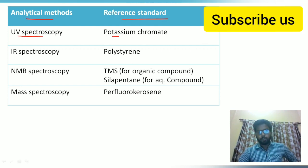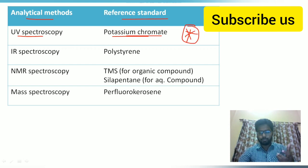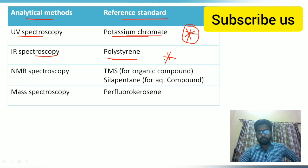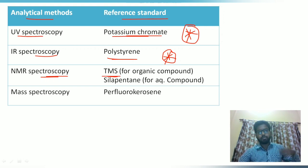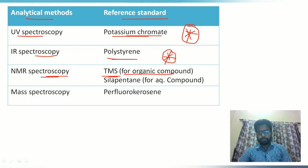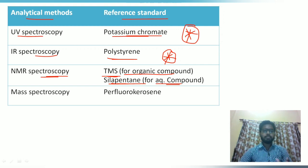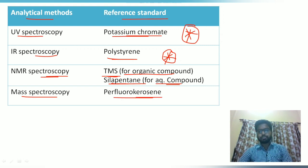In UV spectroscopy, potassium dichromate is used — it is very important and frequently asked in exams. In IR spectroscopy, polystyrene is used — also very important. In NMR spectroscopy, TMS (tetramethylsilane) is used as a reference standard for organic compounds, and DSS is used for aqueous compounds. In mass spectroscopy, perfluorokerosene is used as a reference standard.